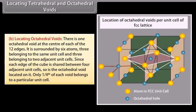Locating octahedral voids: there is one octahedral void at the centre of each of the 12 edges, surrounded by 6 atoms — 3 belonging to the same unit cell and 3 belonging to 2 adjacent unit cells. Since each edge of the cube is shared between 4 adjacent unit cells, so is the octahedral void located on it; only 1/4 of each void belongs to a particular unit cell.